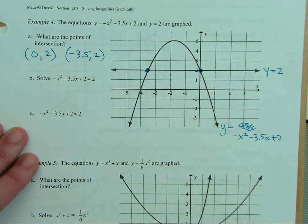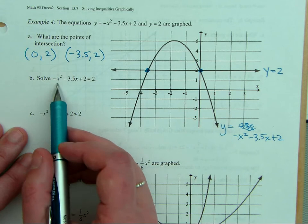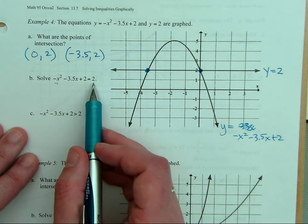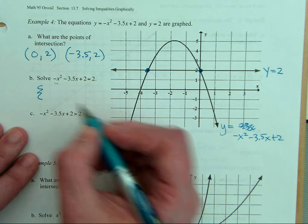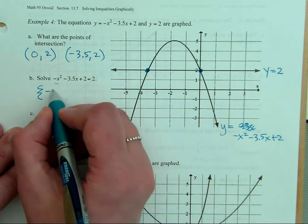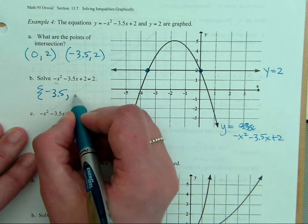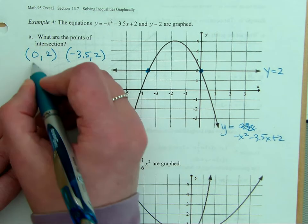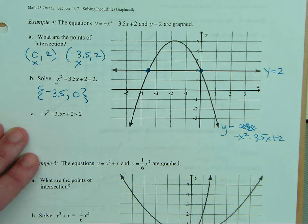Right. So that means if we were going to solve where is the parabola equal to 2, then we have our x values. We're going to put those in set notation. Negative 3.5 and 0 are the x values because those come from the points of intersection.